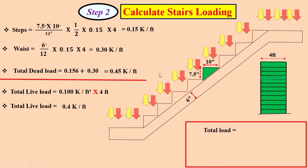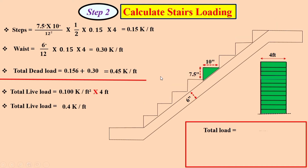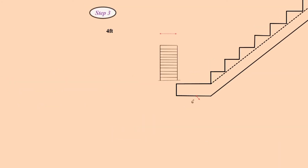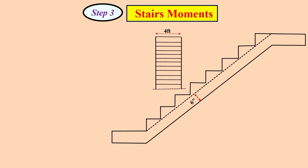So we have the total service dead load and total service live load. To design the stair for the total factored load, per code requirements: total factored load equals 1.4 times service dead load plus 1.7 times service live load. Calculating this per foot gives the total factored load for this stair. Now in the third step we need to calculate the moment for this stair. For an intermediate landing stair, the formula is: Mu = Wu × L² / 12.